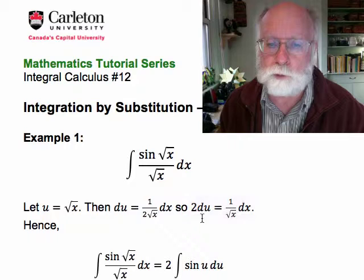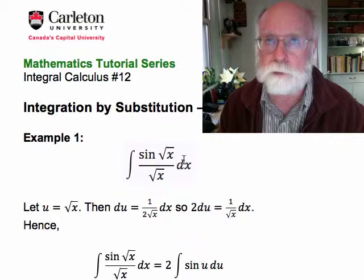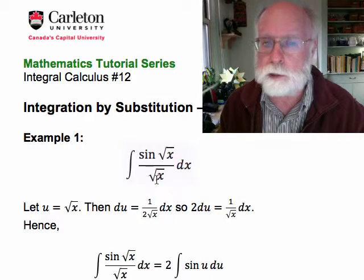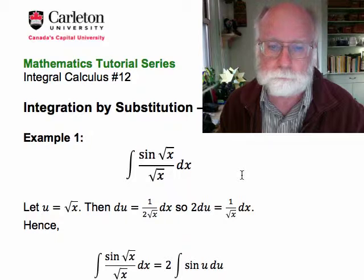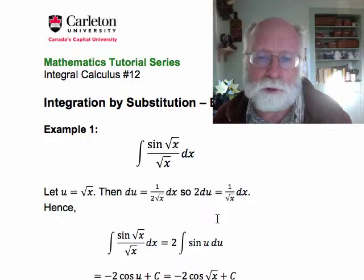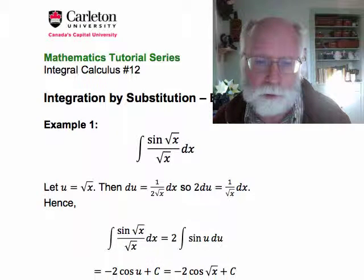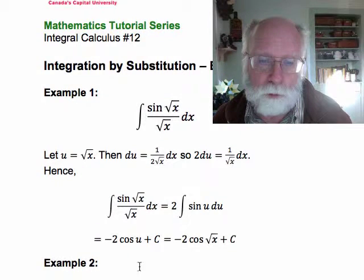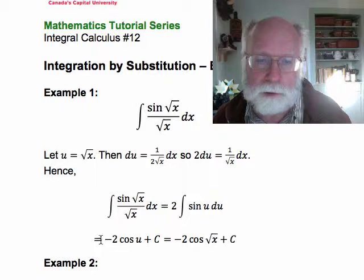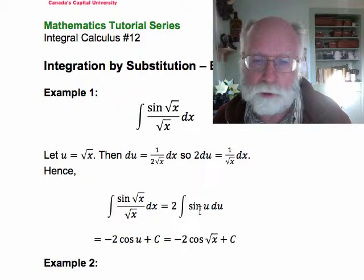So we can move the 2 over and we get 2 du equals 1 over root x dx, and that will look after the 1 over root x dx in our integrand. So when we do the substitution we get sine root x is sine u and dx over root x is 2 du.